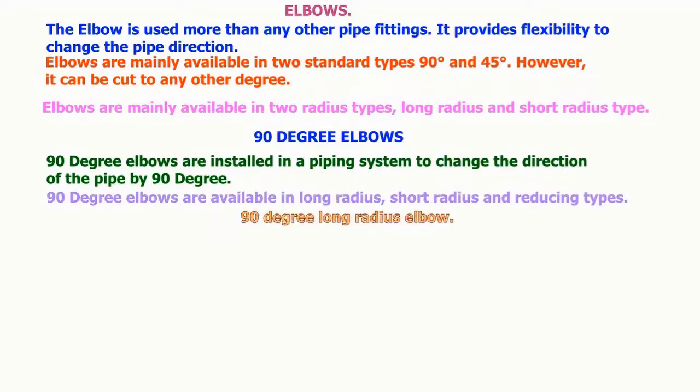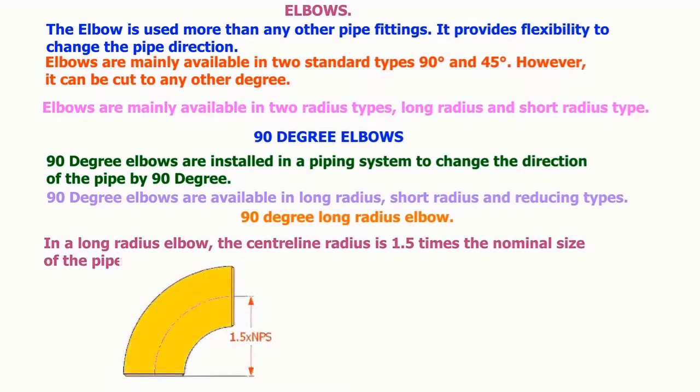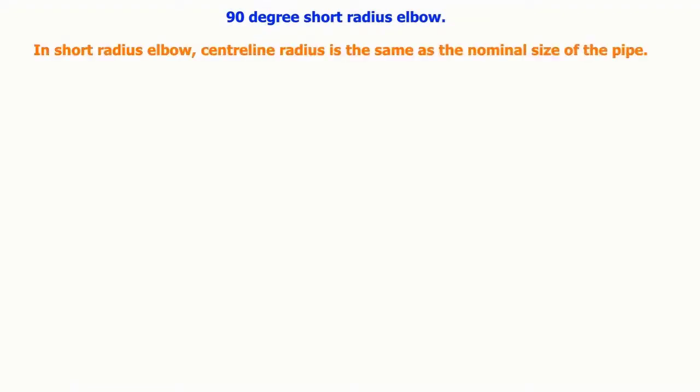In a long radius elbow, the centerline radius is 1.5 times the nominal size of the pipe. In short radius elbow, centerline radius is the same as the nominal size of the pipe.